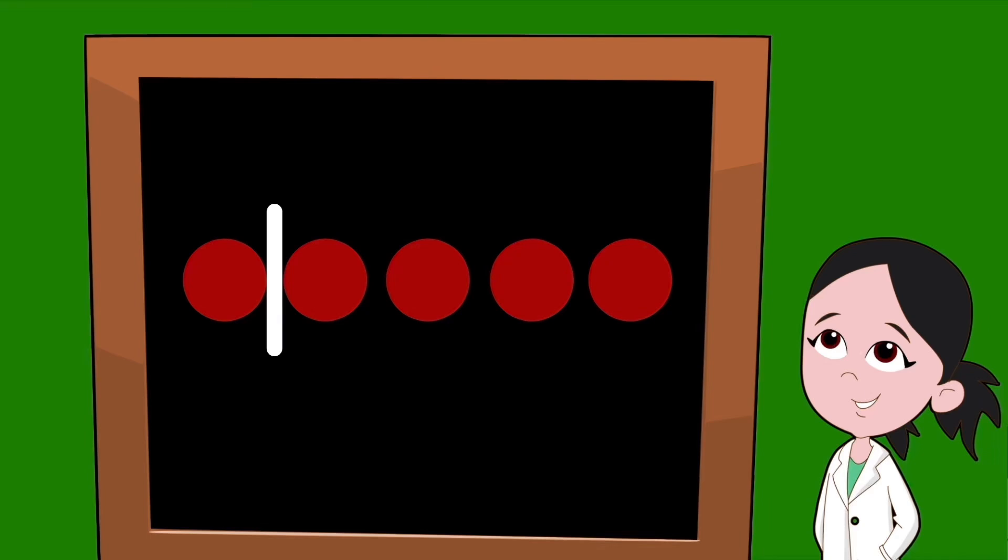Here, we would have one dot on the left and four dots on the right. That pair of numbers is partners, one and four. To make sure we don't miss a number, we move our line over one dot at a time to find all the partners.